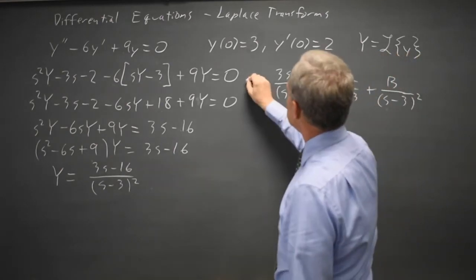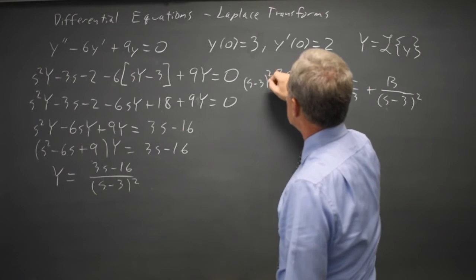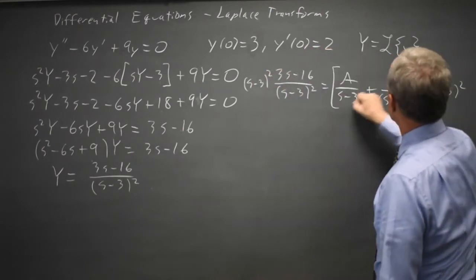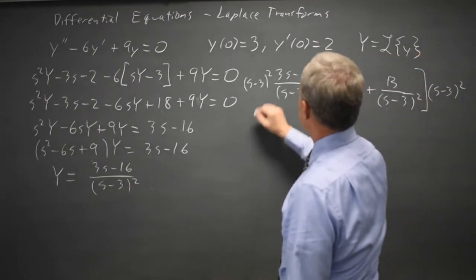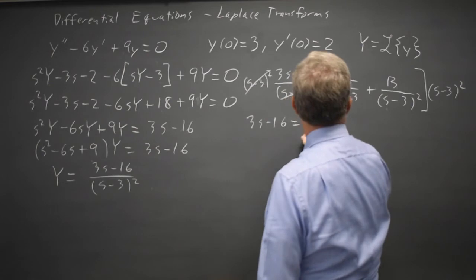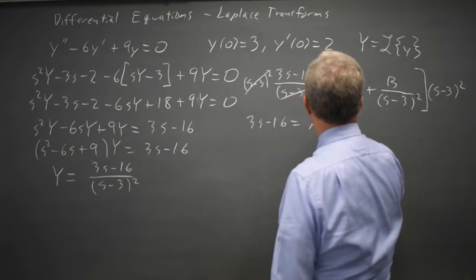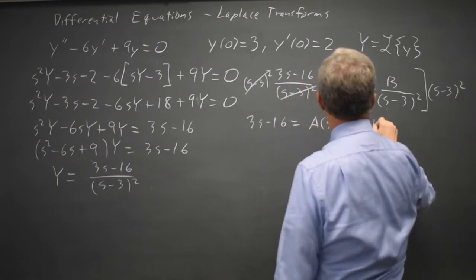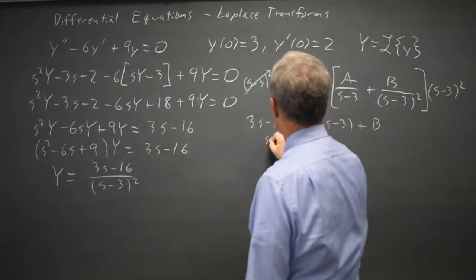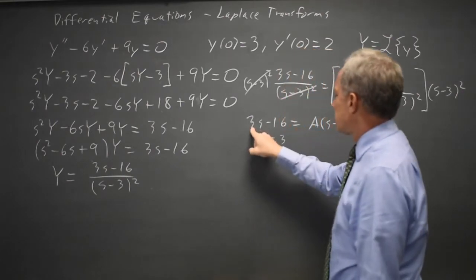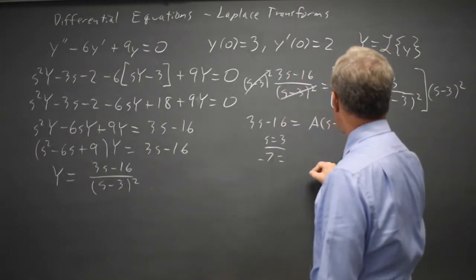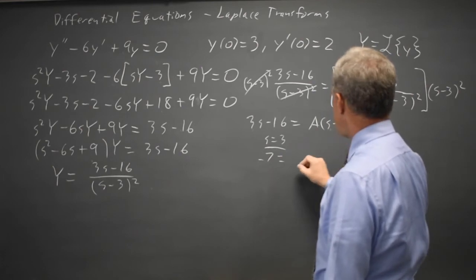Multiply both sides by s minus 3 squared. I get on the left just 3s minus 16 equals on the right a times s minus 3 plus b. If I substitute in s equals 3 that gives me 3 times 3 is 9 minus 16 is negative 7 equals 0a plus b.